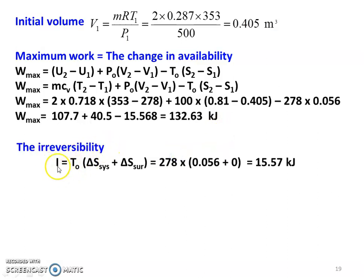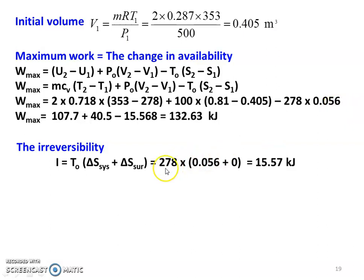The irreversibility: I equal to TO into (delta S system plus delta S surrounding). Delta S system equal to 0.056, delta S surrounding equal to 0 (adiabatic process). So I equal to 278 into 0.056 equal to 15.57 kJ.